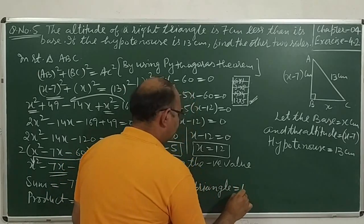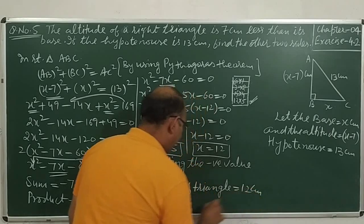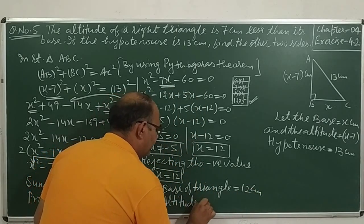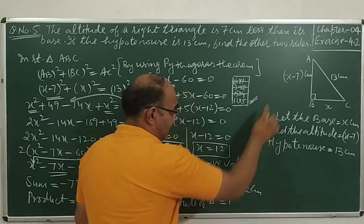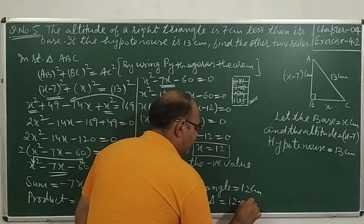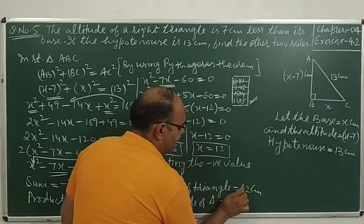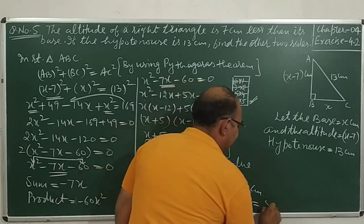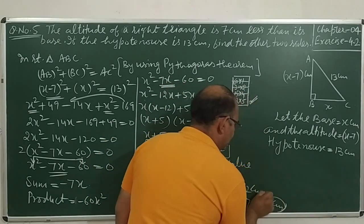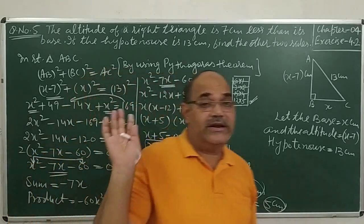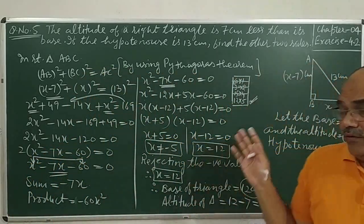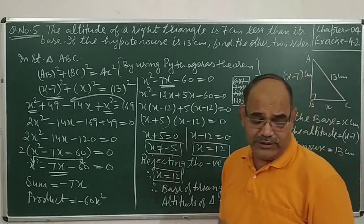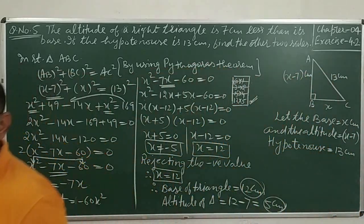The base of the triangle is equal to 12 centimeters, and the altitude of the triangle is x minus 7, so it is 12 minus 7, which is 5 centimeters. These are the two sides of this right triangle, solved by using the splitting middle term method.